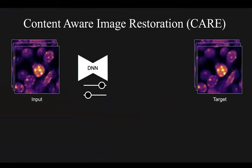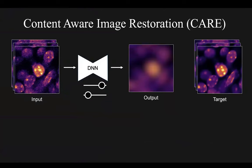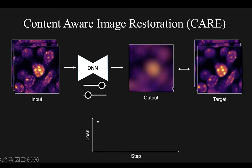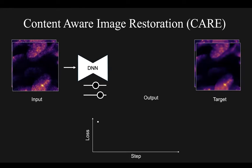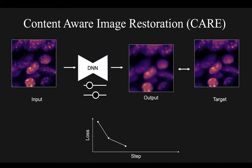To train a network to denoise, you feed a noisy image into the network, which applies some function and produces an output image. At the start of training, the network doesn't know what we want it to do. We teach it to denoise by comparing its output to the known target ground truth image using a loss function — a measure of how different the two images are. This is back-propagated to the network, causing it to adjust its internal parameters so that next time it produces output closer to the target. Repeating this process, the network gets closer and closer to matching the target, effectively learning to denoise.